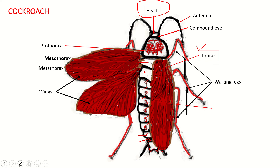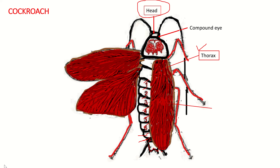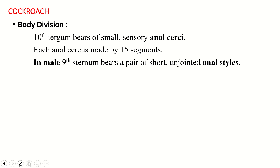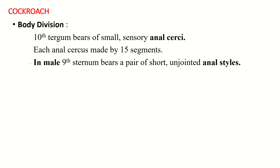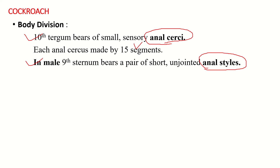This covers the morphological structure of the cockroach. To summarize: in the male, the 9th sternum bears anal styles, helping us differentiate male and female organisms. The 10th tergum in both sexes bears anal cerci made up of 15 segments. This is the information about the external characteristics of the cockroach.